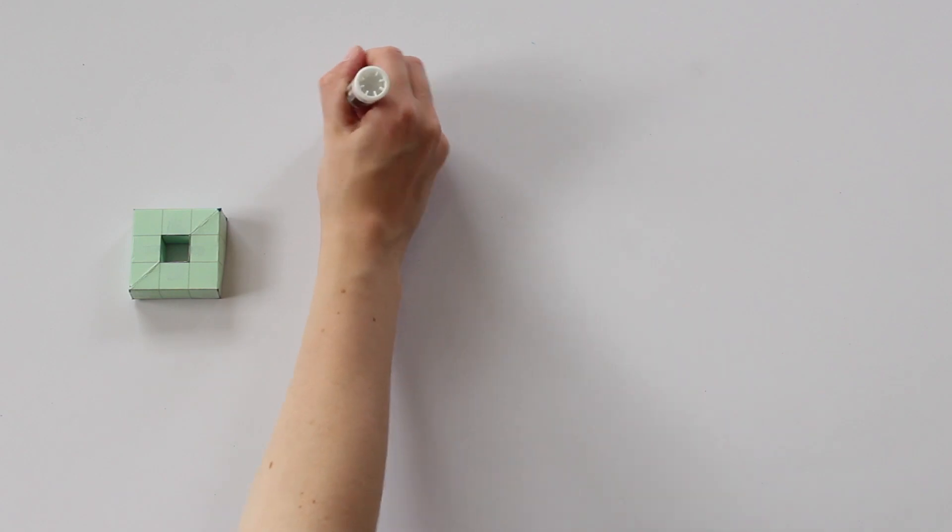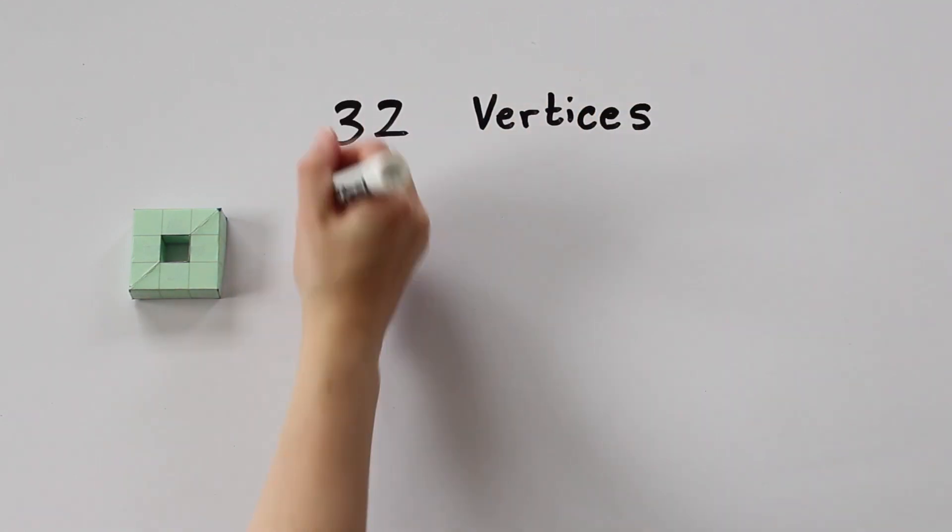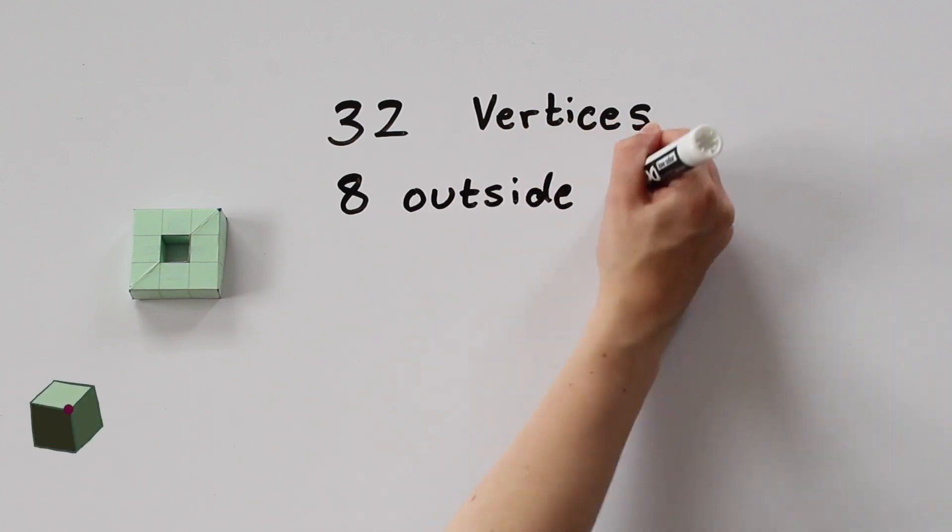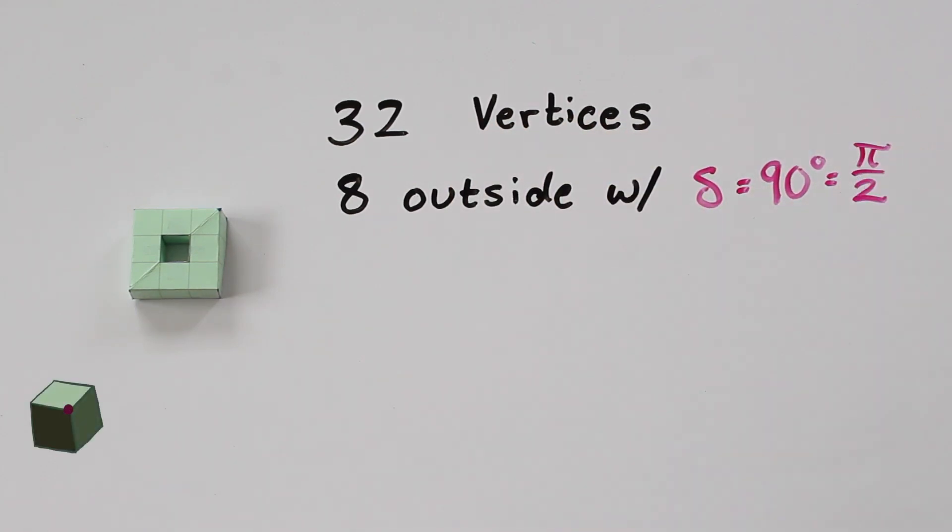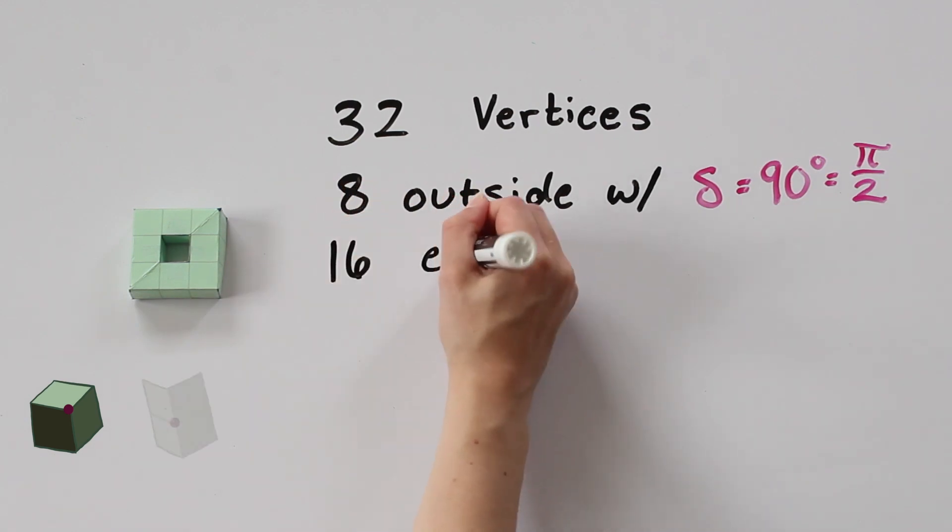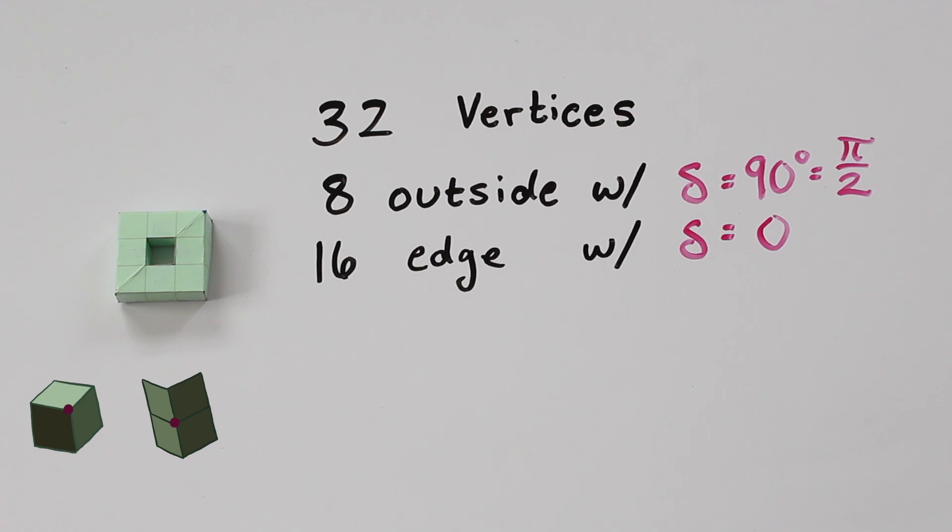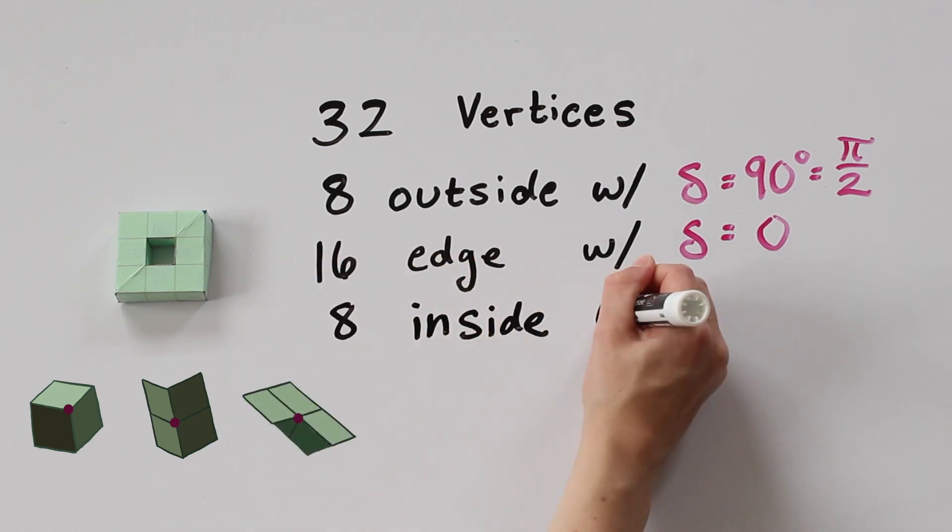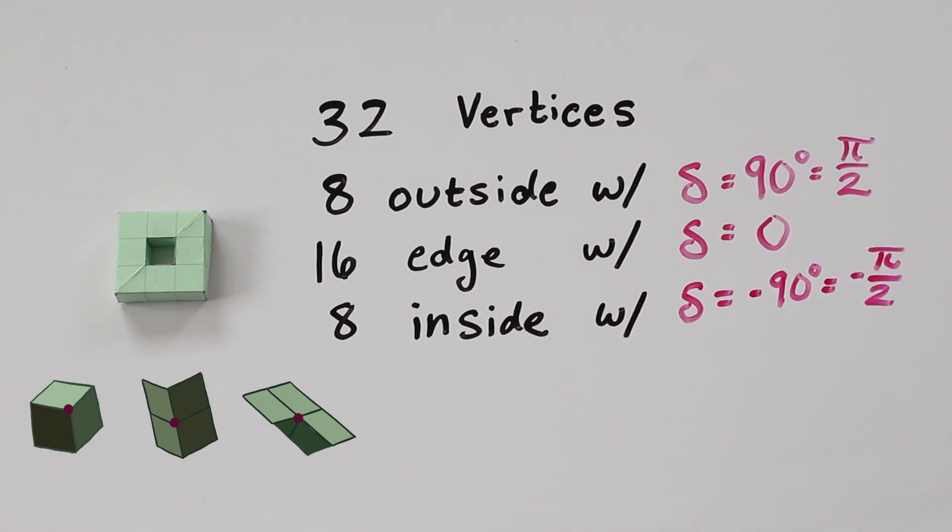So this surface has 32 vertices as we counted last time. There are eight outside corners with an angle deficiency of 90, or π/2. Sixteen edge vertices with an angle deficiency of zero. And that leaves eight inside corners with an angle deficiency of negative 90, or negative π/2.